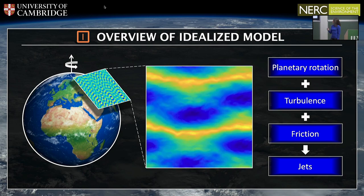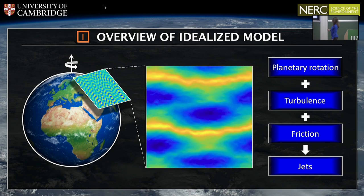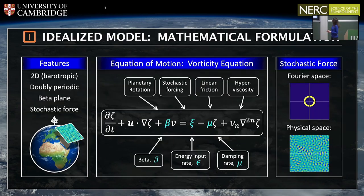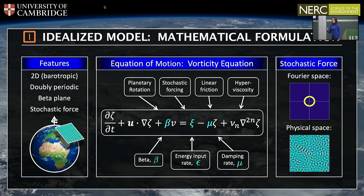In my talk, I'm going to be focusing on the yellow eastward jets and studying their long-time behaviour. This model can be described by a single equation of motion — the vorticity equation for vorticity zeta. We have the non-linear advection term, a beta effect term due to planetary rotation, a stochastic forcing function, linear friction, and hyperviscosity as a way of dissipating the build-up of energy at the smallest scales.